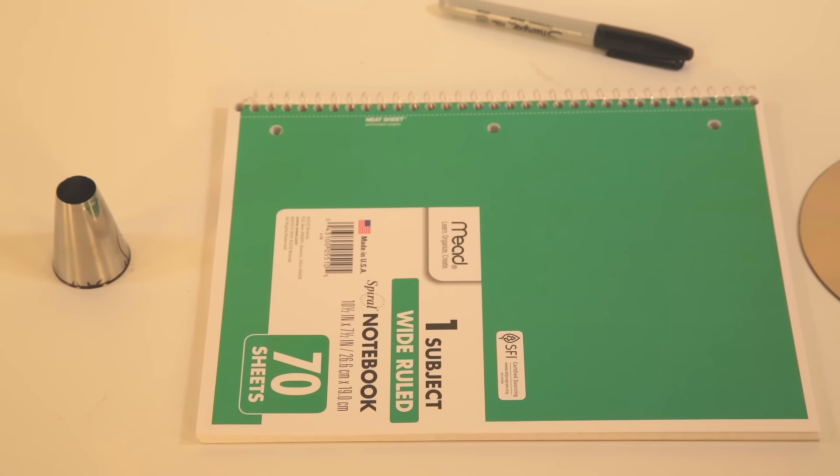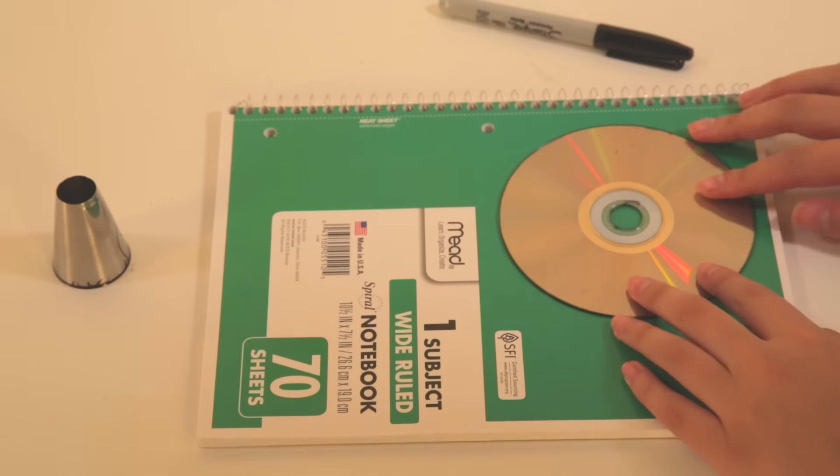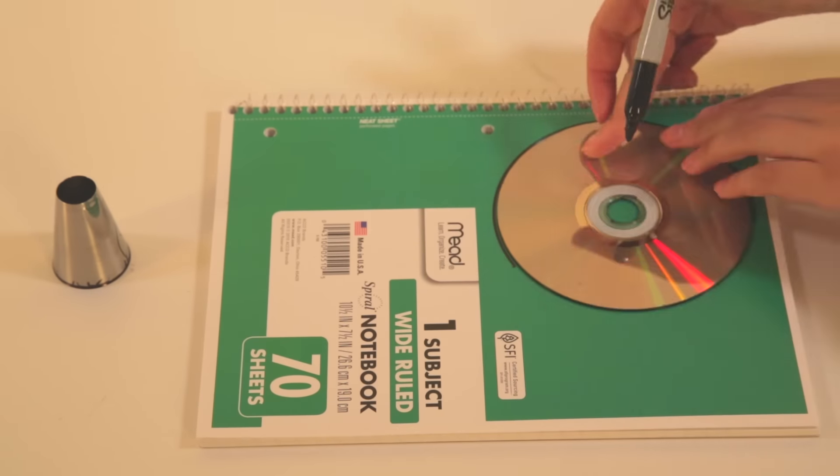While your donut halves are drying, it's time to prep the notebook. Grab your notebook, CD, and circle tip. Trace the shape of the donut onto the notebook.